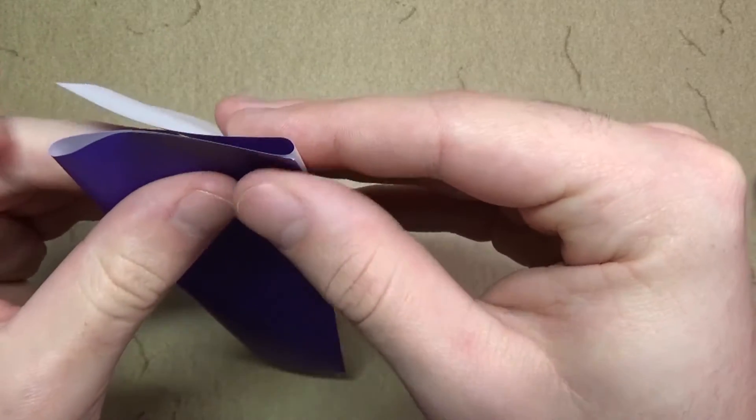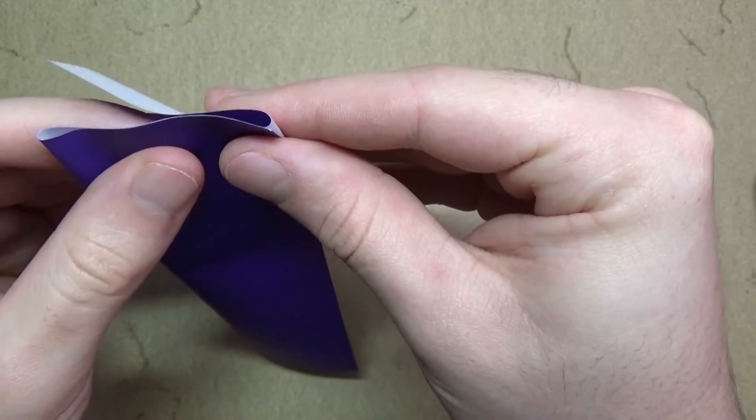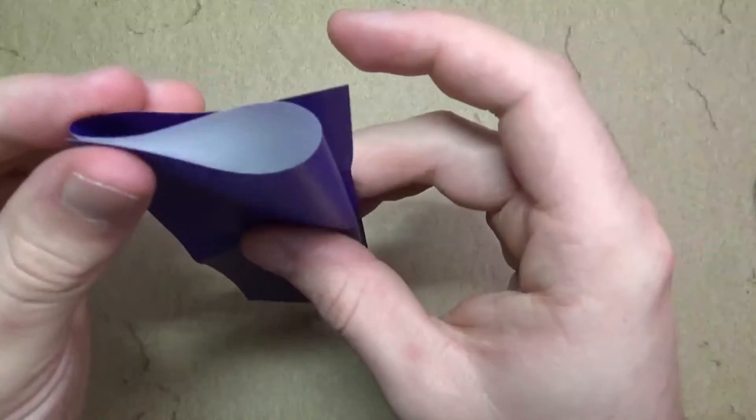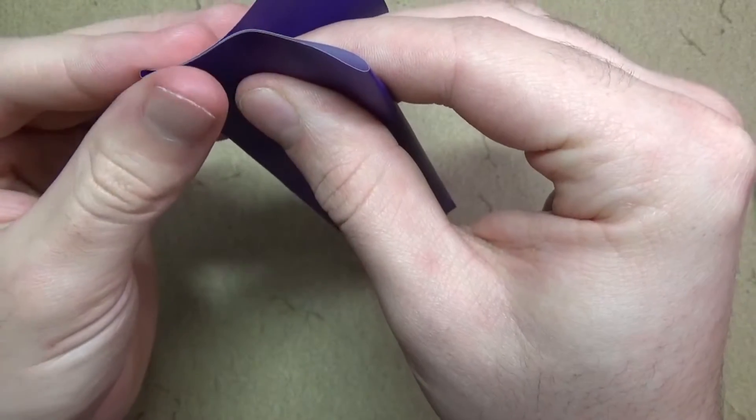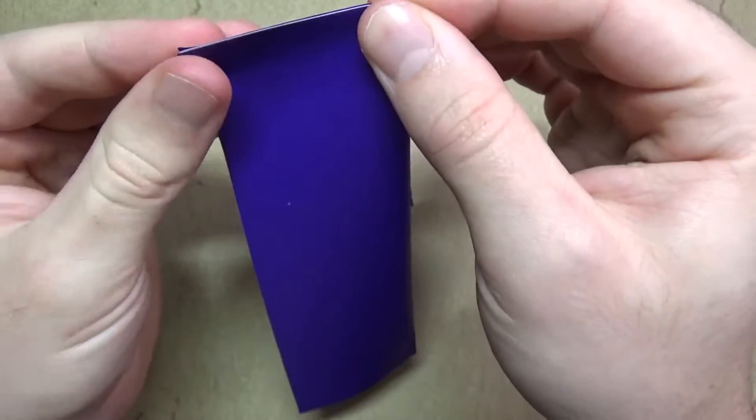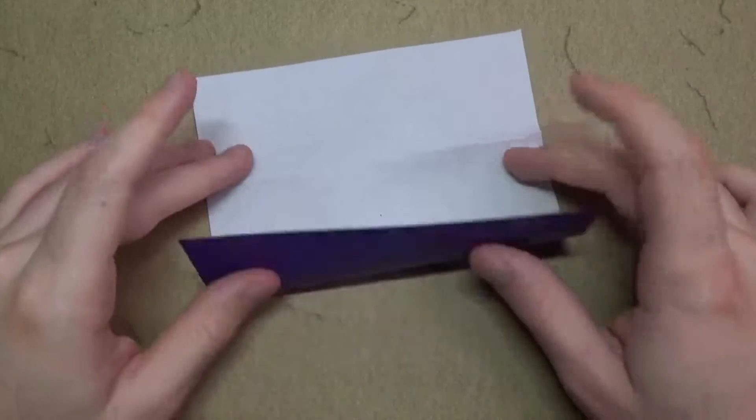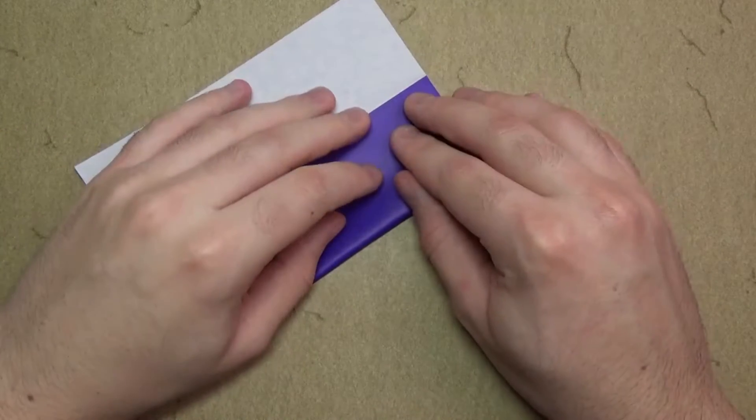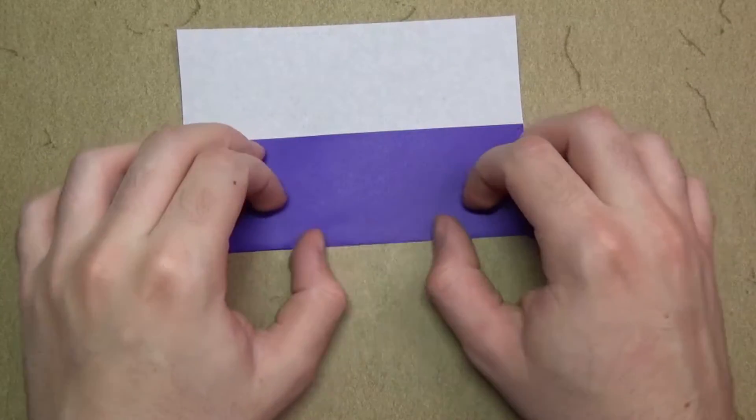And then now just fiddle with the folds until they align, like this. All right, just like that. Make a crease mark, and might as well repeat on the side too. All right. Now white side up and fold this edge to these two crease marks.